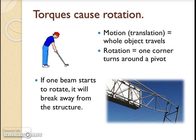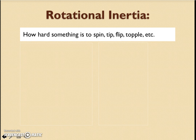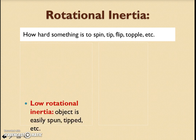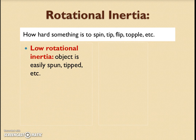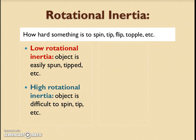How are we going to go about preventing this? Rotational inertia describes how well something holds up under torque — how hard something is to spin, tip, flip, topple, knock over, break off bits, etc. Low rotational inertia means that a little torque will see you through — the object is very easily spun, tipped, and knocked over. We do not want that. We want high rotational inertia, where if you have a little bit of torque, it's not going to do a lot because the object is quite difficult to spin, tip, or knock over.